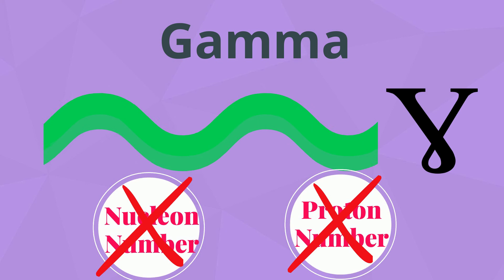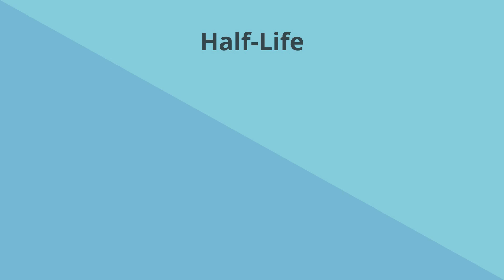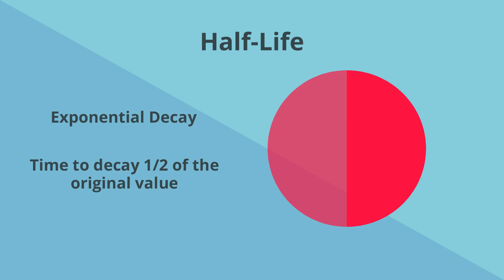The next topic is half-life. The half-life of a quantity subject to exponential decay is the time required for the quantity — meaning mass, number of atoms, or activity — to decay to half its initial value. This graph represents the half-life of a substance.